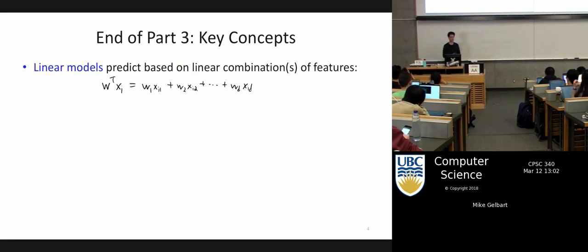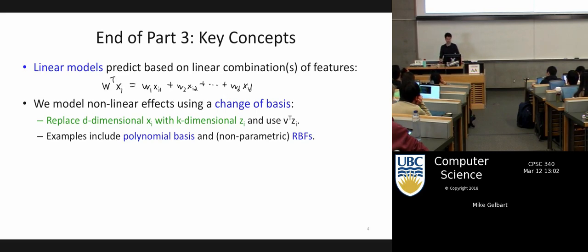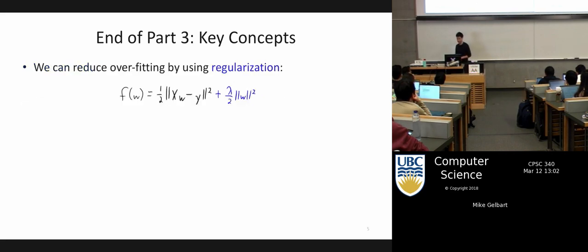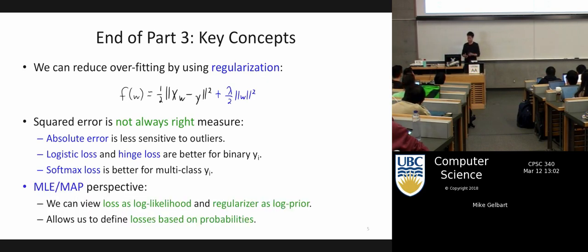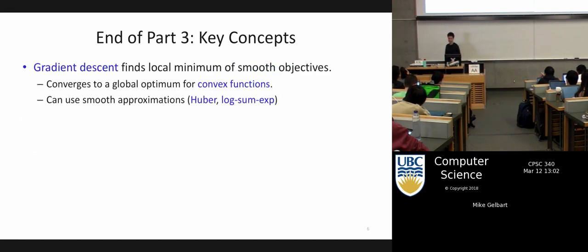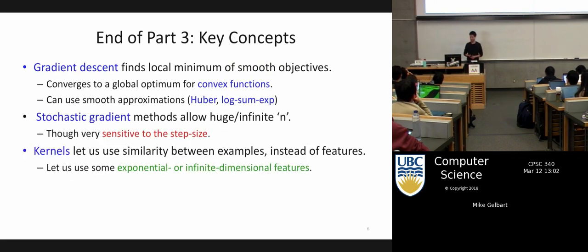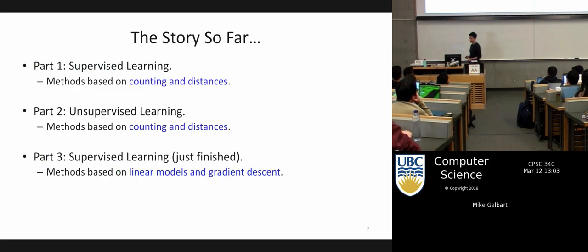Last time we concluded part three of the course, which was linear models for supervised learning. We did this for maybe three weeks — all these different linear models. We talked about change of basis, least squares, regularization, different losses, MLE/MAP stuff, gradient descent and stochastic gradient, kernels, and feature selection. So part three was a pretty hefty part of the course.